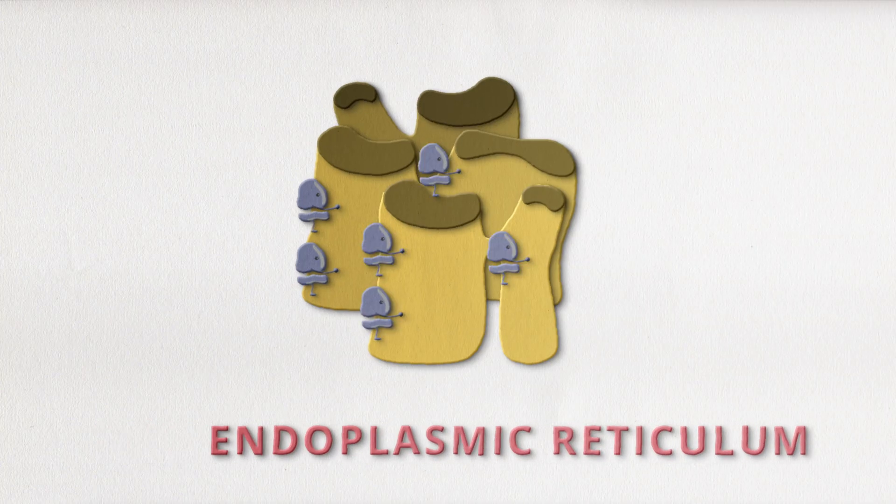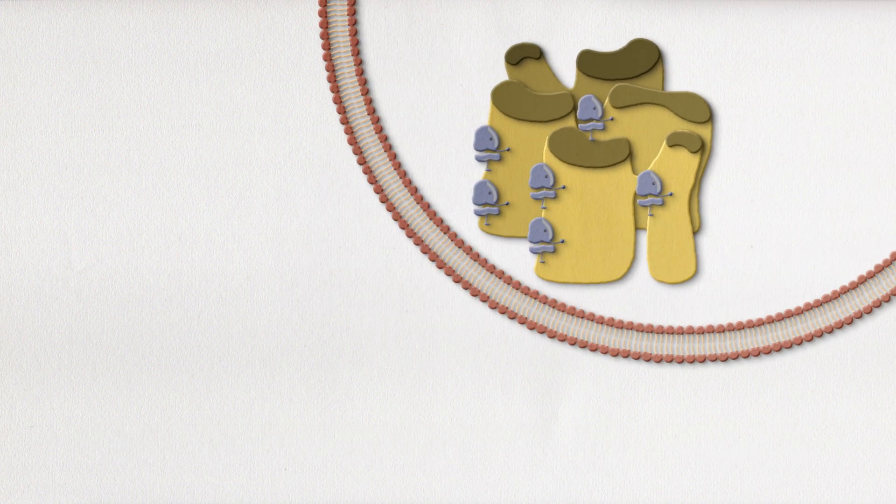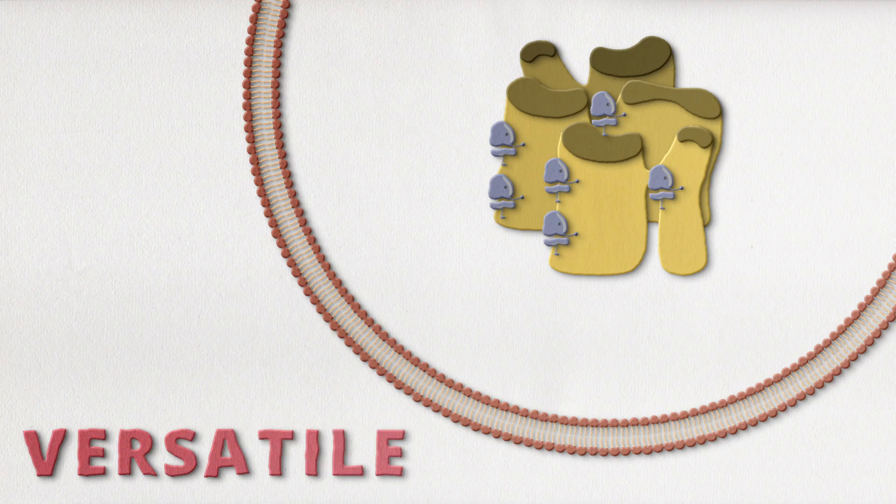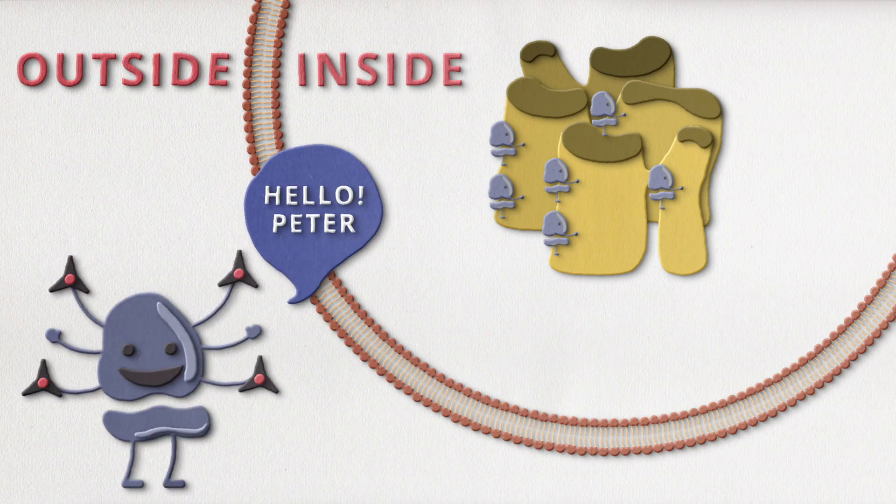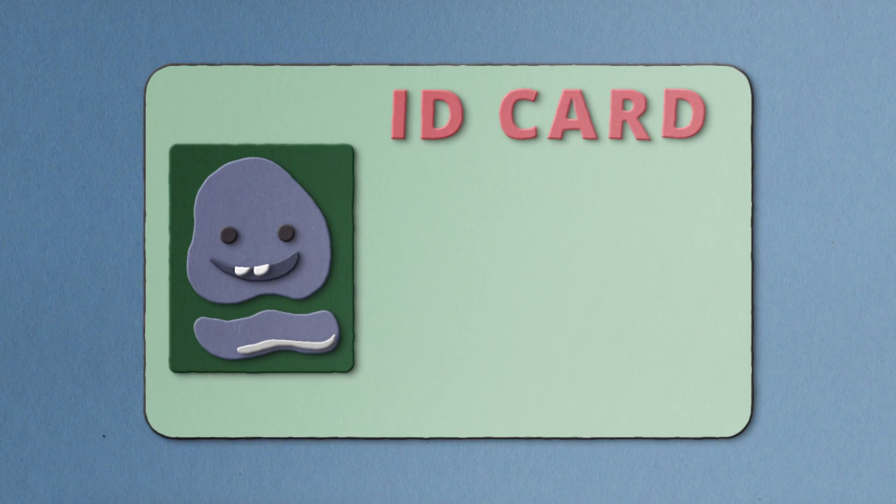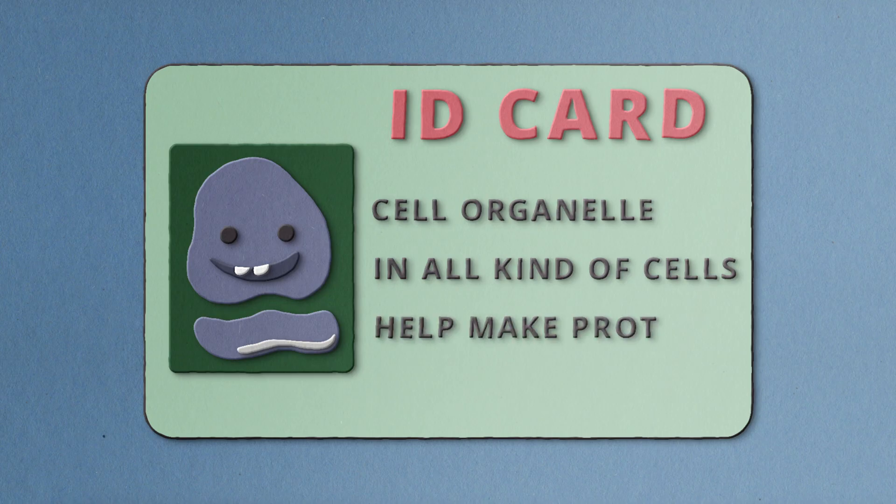Ribosomes on a rough endoplasmic reticulum are versatile and can make proteins that can be used inside or outside the cell. Talk about a jack-of-all-trades. So what have we learned so far? We've learned that ribosomes are organelles, that they are found in all kinds of cells, just in different places, and their main function is to help make protein.